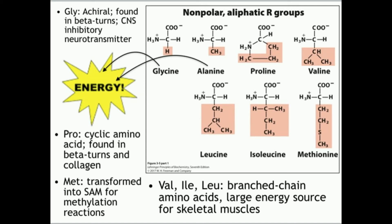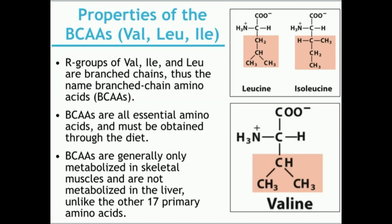We have three amino acids — valine, isoleucine, and leucine — which are going to be referred to as branched chain amino acids, and they are a very important source of energy for skeletal muscle. We typically abbreviate these as BCAAs. If you go to a drugstore, you'll often see supplements called BCAAs. The reason they're called this is that if you look at their R groups, they at some point have a branched carbon chain.